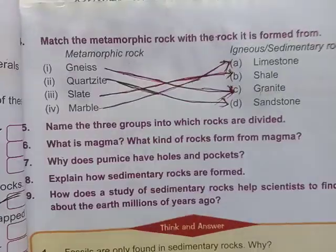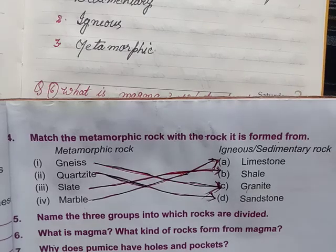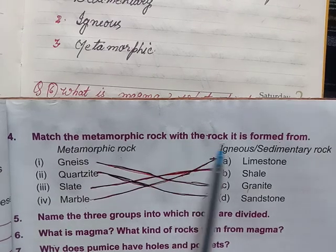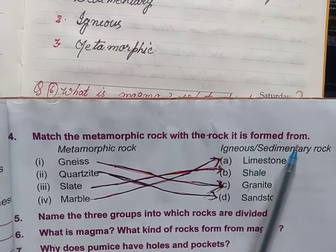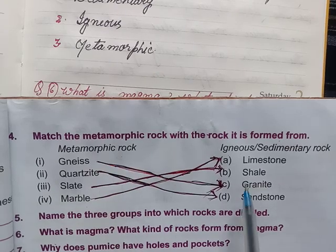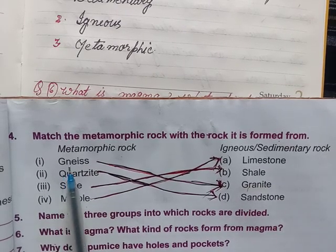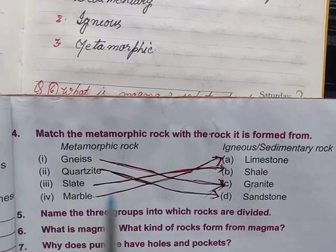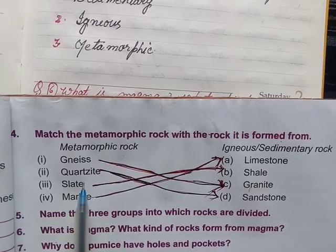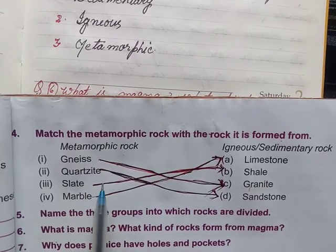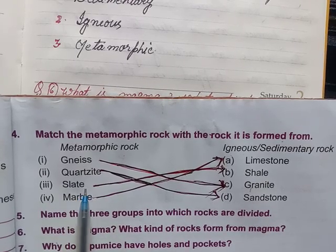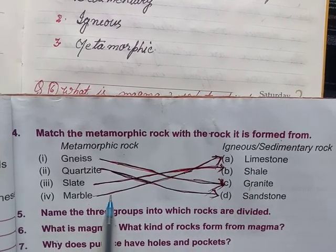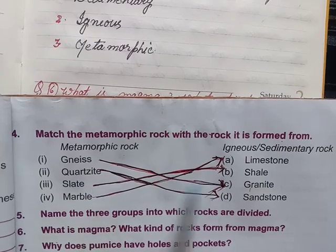Question 4: match the metamorphic rocks with the rock it is formed from — igneous or sedimentary rocks. Igneous answer is granite. Quartzite from sandstone. Slate from shale. Marble from limestone.